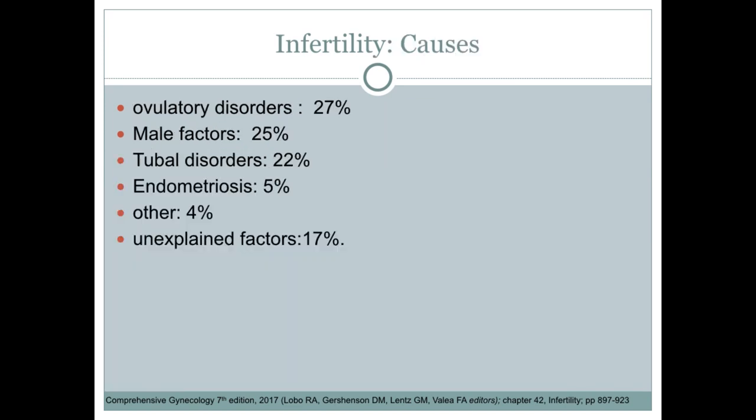Here are the causes of infertility. The exact incidence of the various factors causing infertility varies among different populations. It is reported that among 14,141 couples in 21 publications, ovulatory disorders occurred in about 27%, male factors in 25%, tubal disorders in 22%, endometriosis in 5%, unexplained factors in about 17%, and other factors at 5%.